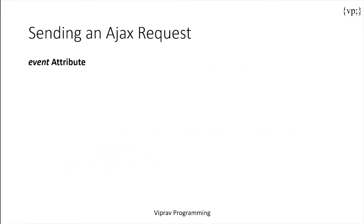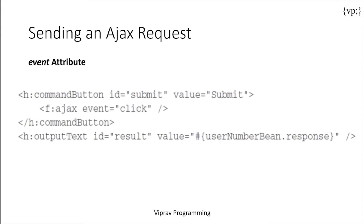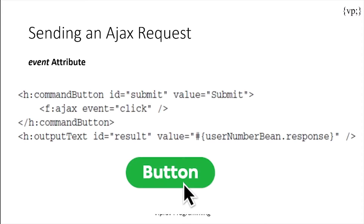Now let's take a look at sending an AJAX request. To activate AJAX functionality, the web application must create an AJAX request and send it to the server. One way is using an event attribute — in this example, it explains how you can use an AJAX tag to create an event called click. The event that triggers the AJAX action is a mouse click on this button.